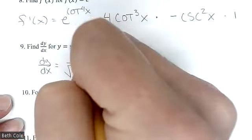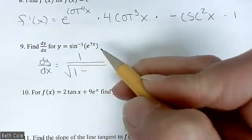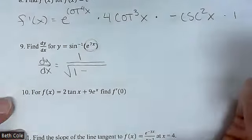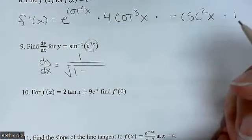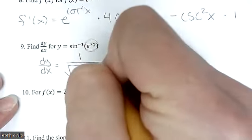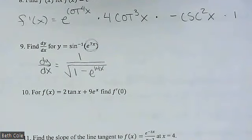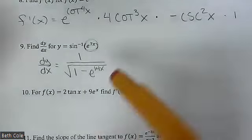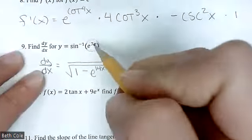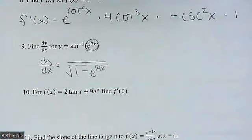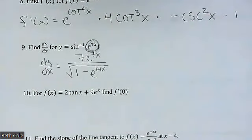What goes in the square root is one minus — the rule says x squared, but it's this stuff squared. So you'd have to do two times seven, which is 14 — it would be e to the 14x. It's e to the 7x squared, and seven times two is 14. And then you would have to chain on — I'm going to put it in the numerator — the derivative of e to the 7x, which would be e to the 7x times seven. It's multiple choice, so if you keep your head and stay calm enough, you'll probably be able to pick the answer choice.